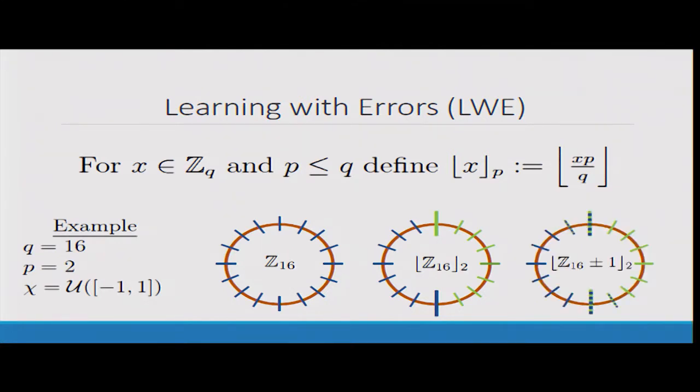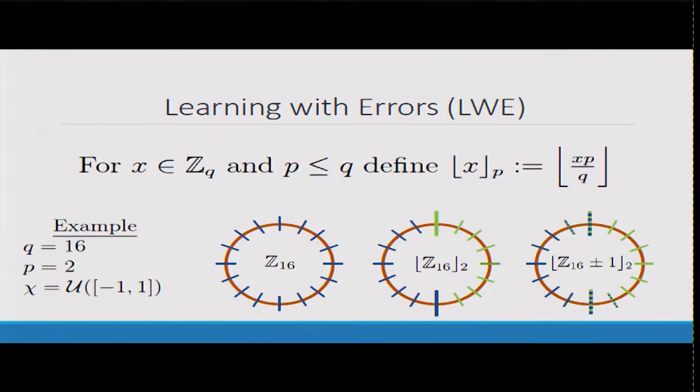What that does is it takes any given element from Z16 and puts it in one of two buckets, either the green bucket or the blue bucket. If we have an error distribution with very small errors, most elements will still end up in the same bucket. The exception are these elements with dotted lines, the overflow zone.